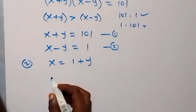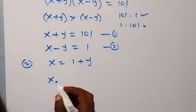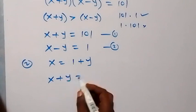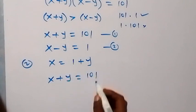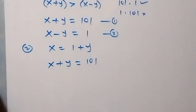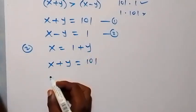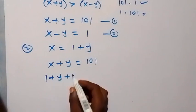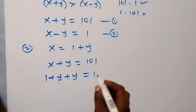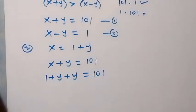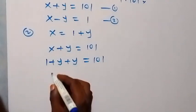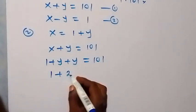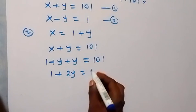equation 1. So equation 1, which is x + y = 101, becomes 1 + y + y = 101. This is the same thing as 1 + 2y = 101.